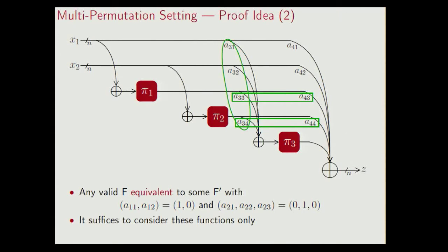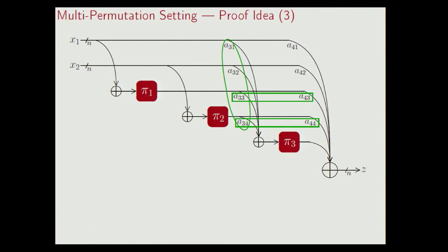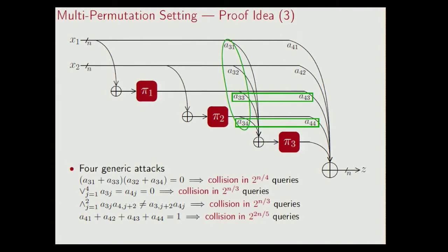So this was step two of the proof. We already drastically reduced the amount of functions to be analyzed, from 2 to the power of 14 to slightly less than 256. Now in the third part of the proof, we derive four generic attacks. The first one states that if a31 and a33 are 0, or a32 and a34 are 0, you can find collisions in at most 2^(n/4) queries. While each of these attacks only covers a handful of functions, together they cover almost all functions. In fact, there are only four functions resistant to these four attacks, and those are F1, F2, F3, and F4.